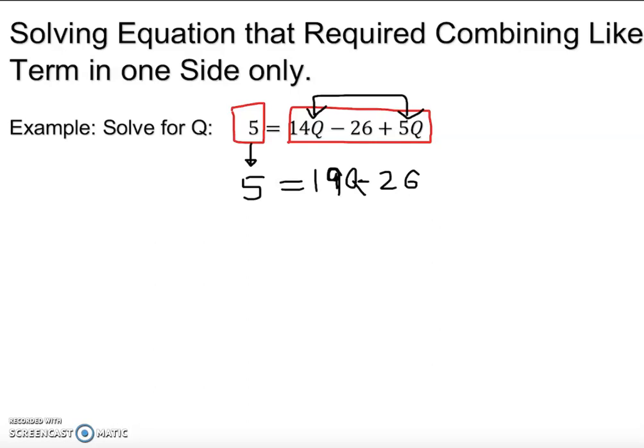Alright, so now I clearly see this is my variable so we have to isolate it. So this is negative 26 so we do opposite 26 in both sides, so plus 26 plus 26.